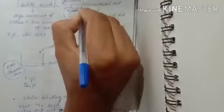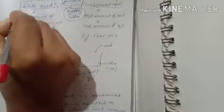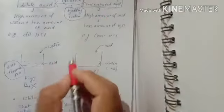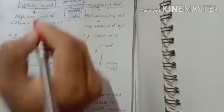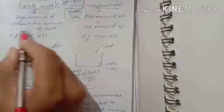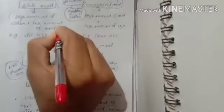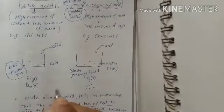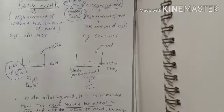Third part: dilute acid and concentrated acid. This is dilute acid and this is concentrated acid. Dilute acid means there is a high amount of water and a less amount of acid. This is the main definition of dilute acid. Concentrated acid has less amount of water.